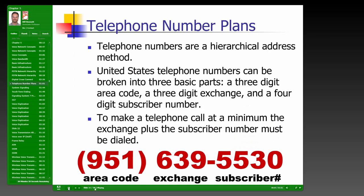A telephone number, like an IP address, is a hierarchical addressing system. The three components are: the three-digit area code, the exchange number (identifying the central office), and the subscriber number (the individual receiving the call). At a minimum, you need the exchange and subscriber number; the area code isn't always required.